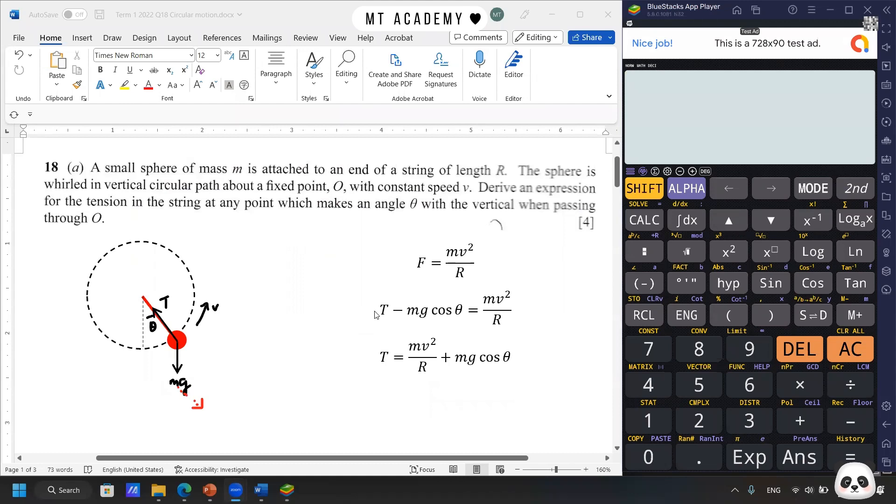Remember about that. So why we have tension minus mg cos θ? Because we have a net force toward the center. So it's the T minus mg cos θ, that is the cos θ, equals to mv² over R. Finally, we have the tension is equal to mv² over R plus mg cos θ.